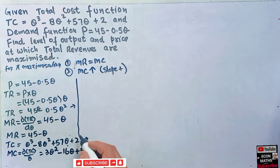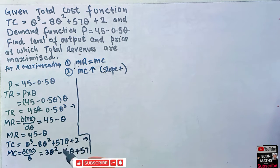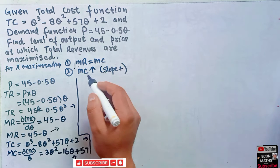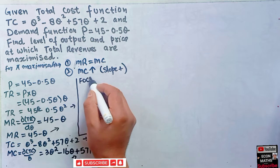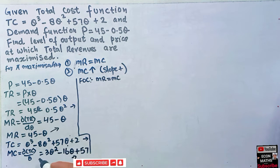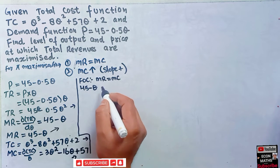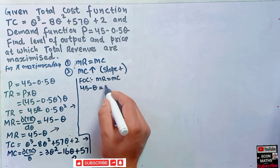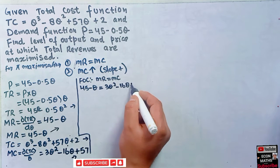Now we apply the first order condition for revenue maximization: marginal revenue must equal marginal cost. So we set MR = MC: 45 - Q = 3Q² - 16Q + 57.